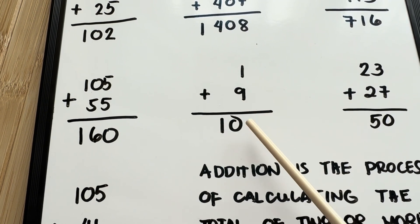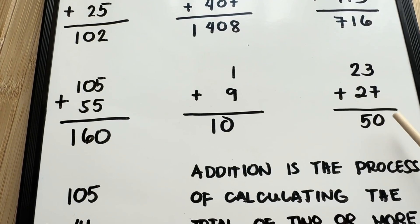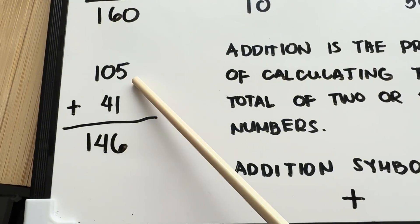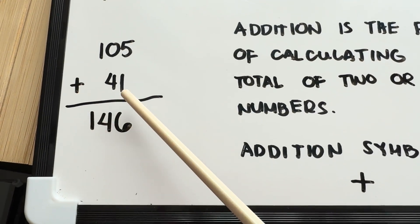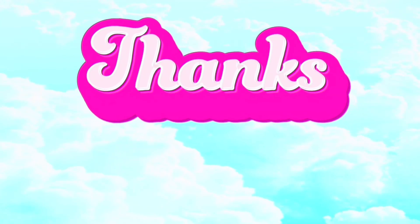1 plus 9 equals 10. 23 plus 27 equals 50. And lastly, 105 plus 41 equals 146.